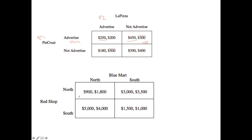Now let's look at the second example: Red Shop and Blue Mart, with two actions — positioning their stores in North or South. First, think about what Red Shop does if Blue Mart positions themselves in the North. Cover the right-hand side and only think about Red Shop's payoffs: 900 versus 5,000 — Red Shop would definitely go for 5,000. Now if Blue Mart positions in the South, cover the left-hand side: Red Shop goes North because 3,000 is greater than 1,500.